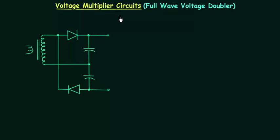In the last lecture we completed the half wave voltage doubler. In this lecture I will explain the working of a full wave voltage doubler circuit. This is the circuit and we have to analyze it for different half cycles.